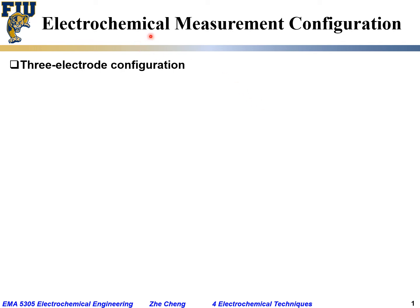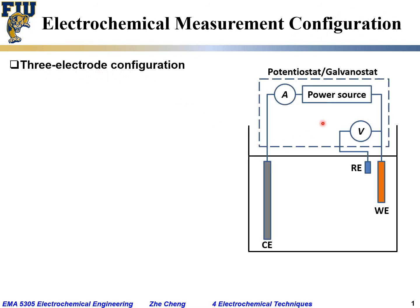When one wants to carry out electrochemical measurement, the general configuration is often the so-called three-electrode configuration. If we are using a liquid electrolyte, we have a container that contains the electrolyte and we have three electrodes. The first one we call WE, or working electrode — it's often the electrode of interest.